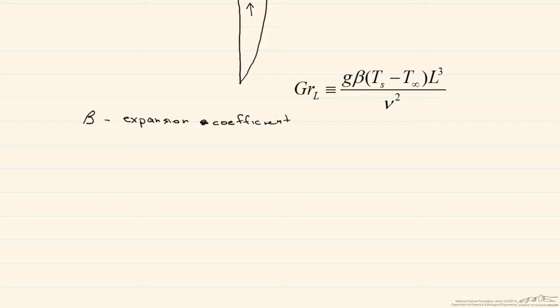So a higher Grashof number would indicate a larger presence of free convection. Another important parameter is the Rayleigh number, which is actually equal to the Grashof number times the Prandtl number.